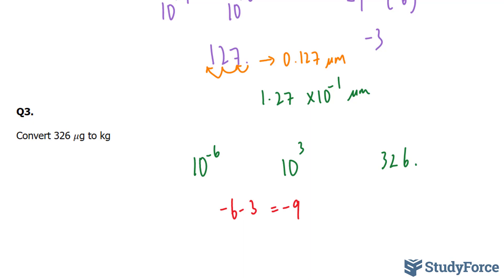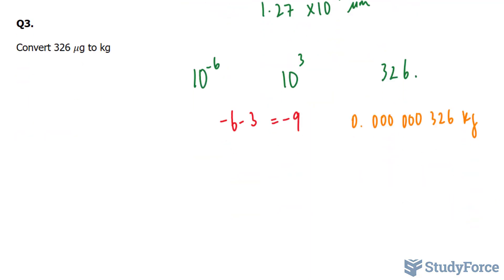And if that happens, we end up with this number, 0.000326 kilograms. And if we convert this into scientific notation, we end up with 3.26 times 10 to the power of negative 7 kilograms.